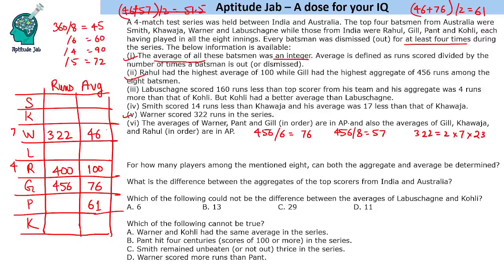The averages of Gil, Khwaja, and Rahul in that order are also in arithmetic progression. Gil's average is 76 and Rahul's average is 100. Khwaja must be the middle term between them, so Khwaja's average = (76 + 100) / 2 = 88. We have now found the averages for Warner (46), Pant (61), Gil (76), Khwaja (88), and Rahul (100).